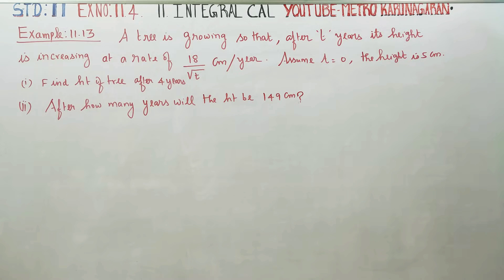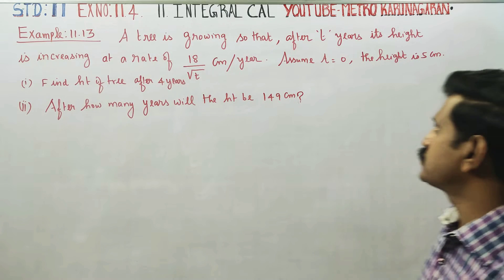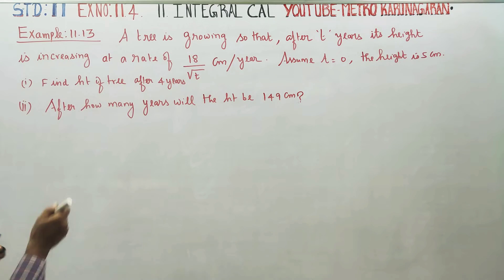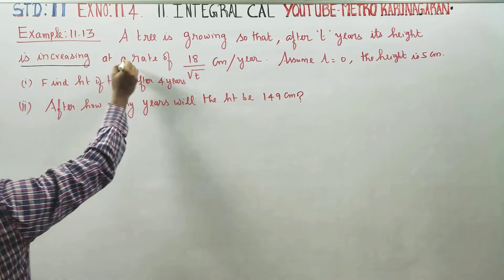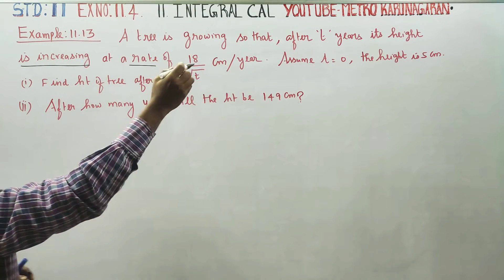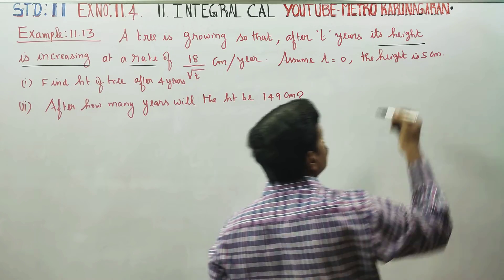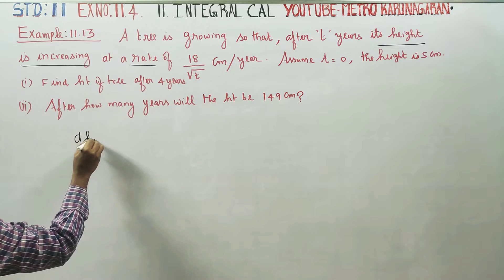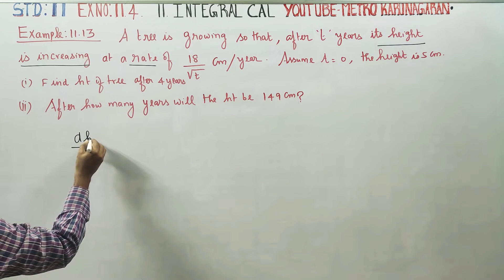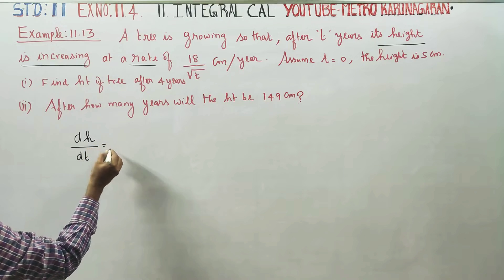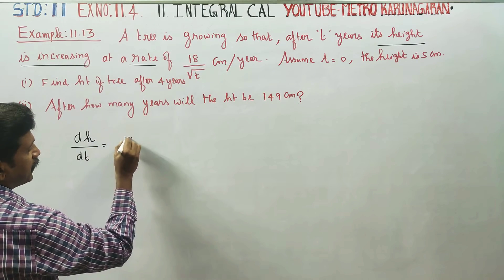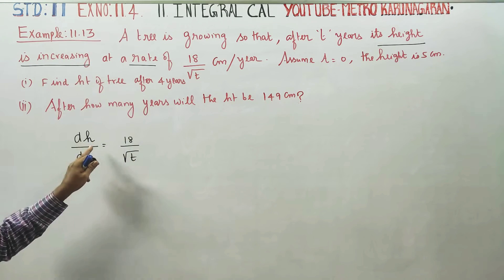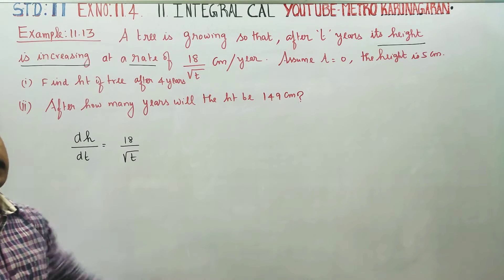In example 11.13, a tree is growing so that after 10 years its height is increasing at a rate of dh/dt — the rate of change of height — which is 18 by root t centimeters per year.